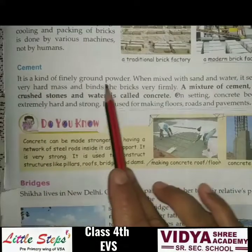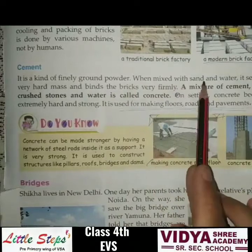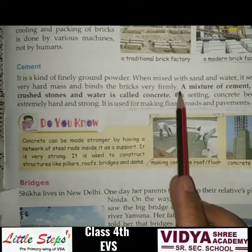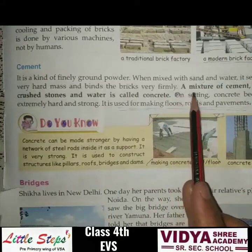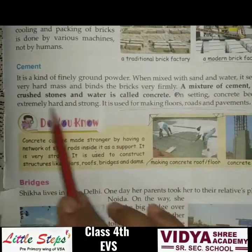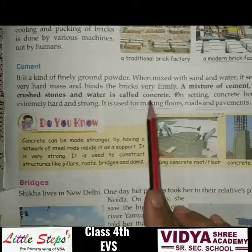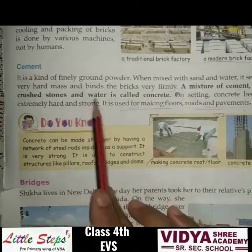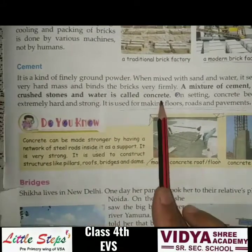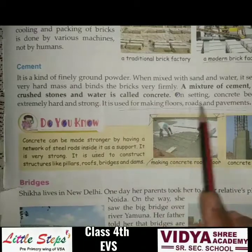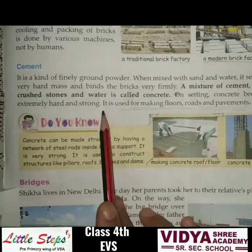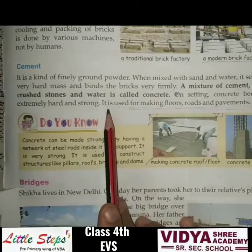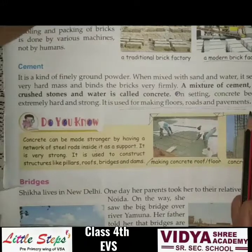Cement is a kind of finely ground powder. When mixed with sand and water, it sets to a very hard mass and binds the bricks very firmly. A mixture of cement, sand, crushed stones, and water is called concrete. On setting, concrete becomes extremely hard and strong. It is used for making floors, roads, and pavements.